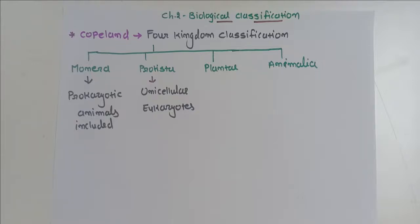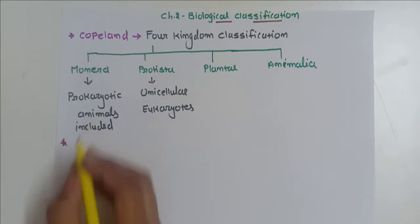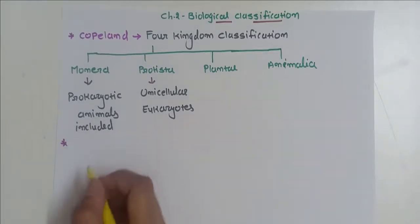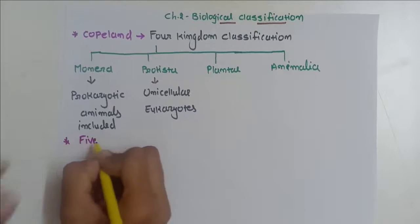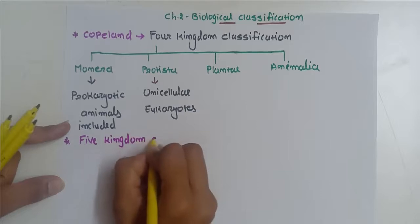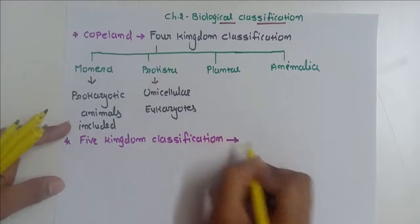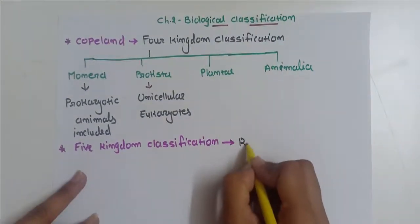But here there was still no specific place for fungi-like organisms. So this is the limitation of Copland's classification. Again, the five-kingdom classification arose, and this was given by R.H. Whittaker.